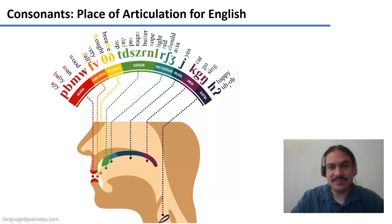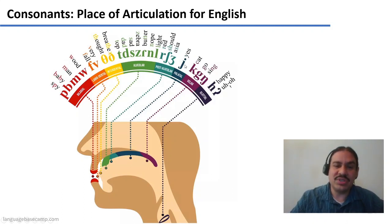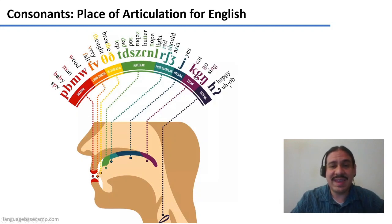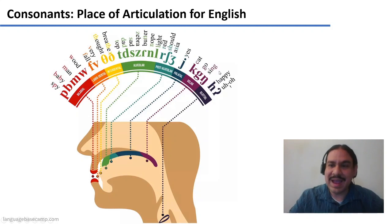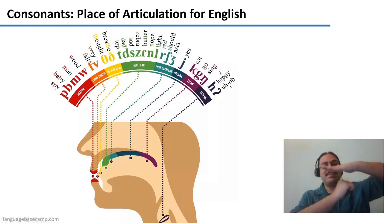'Should.' We have the palatal region, which has the first sound of the word 'yes.' The velar region has sounds like K and G for 'cat' and 'go.' There's also a sound called engma — this is the last sound of the word 'sing,' which has the body of your tongue against the back of your mouth, the velar region.